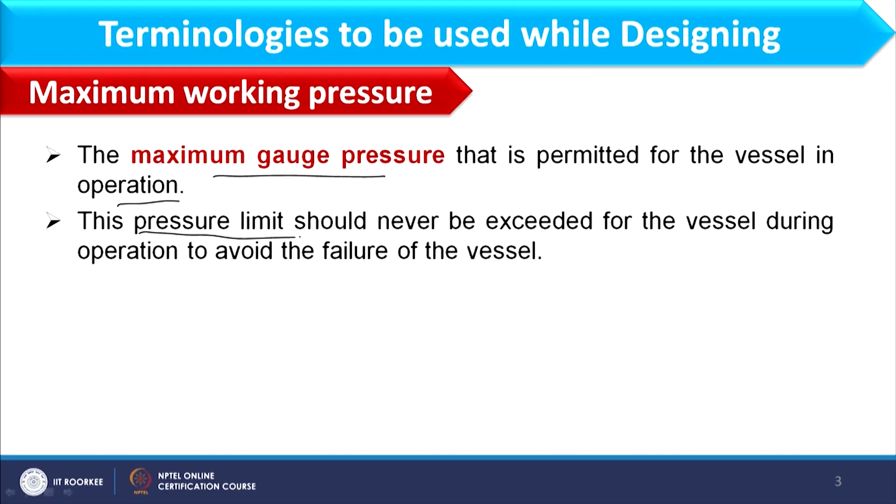For example, if the system is being operated at 2 MN/m² and some variation may be found, like 2.1 or 0.05, the maximum possible value observed in operation should be considered as maximum working pressure. If it is given in absolute, we should convert it first into gauge before using. This pressure limit should never be exceeded for a vessel during operation to avoid failure.